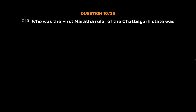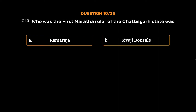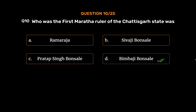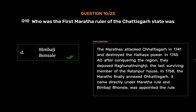Question No. 10: Who was the first Maratha ruler of Chhattisgarh? Option A: Rama Raja. Option B: Shivaji Bhonsle. Option C: Pratap Singh Bhonsle. Option D: Bimbaji Bhonsle. The correct answer is Option D: Bimbaji Bhonsle. The Marathas attacked Chhattisgarh in 1741 and destroyed the Haihaya power. In 1745 AD, after conquering the region, they deposed Raghunath Singh Ji, the last surviving member of the Ratnapur house. In 1758, the Marathas finally annexed Chhattisgarh, and Bimbaji Bhonsle was appointed the ruler.